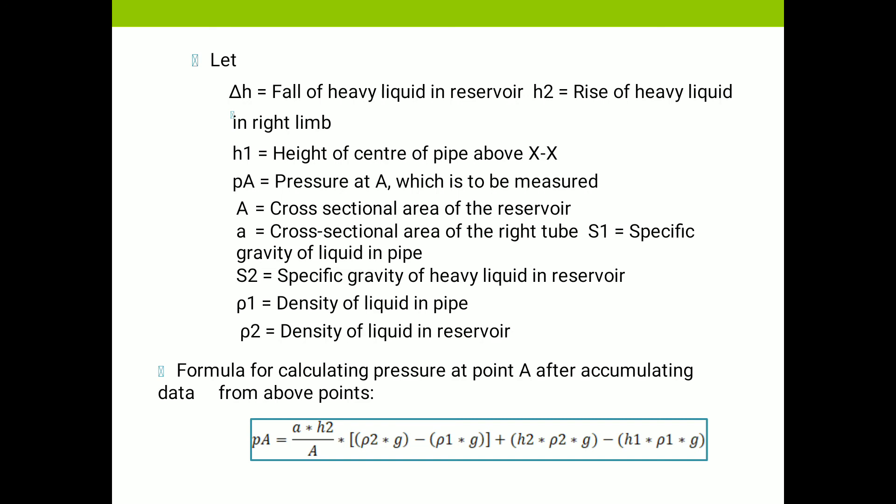S1 is the specific gravity of the liquid in the pipe, S2 is the specific gravity of the heavy liquid in the reservoir; ρ1 is the density of the liquid in the pipe, and ρ2 is the density of the liquid in the reservoir. After simplification, we get the equation: PA = (a·H2 / A)·ρ2·g − ρ1·g + H2·ρ2·g − H1·ρ1·g.